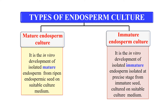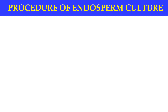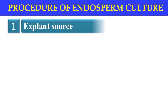The procedure of endosperm culture includes the first step: the explant source. First of all, we select the explant from where we can isolate the endosperm. In most cereals, the mature endosperm does not respond to cultural conditions.